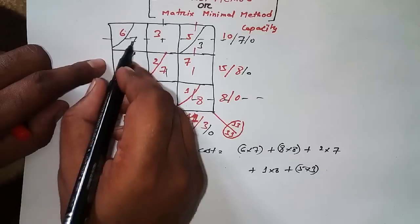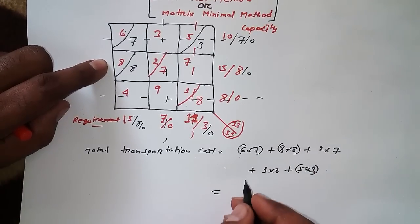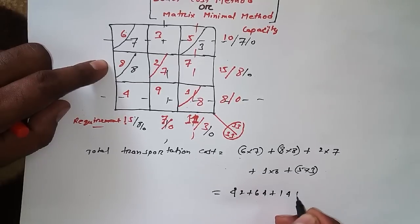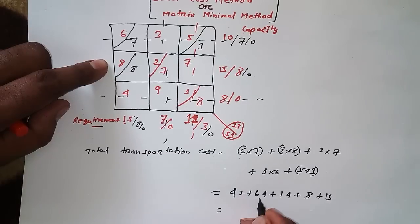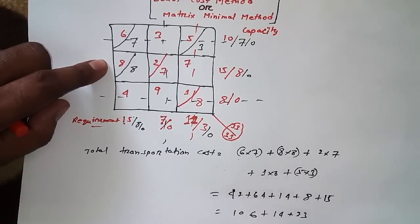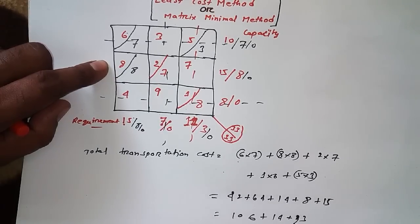That's 42, 64, 14, 8 plus 15. So 106, this one is 15, 8, 23, 14 plus 23, so 106, 37. The answer is 143.